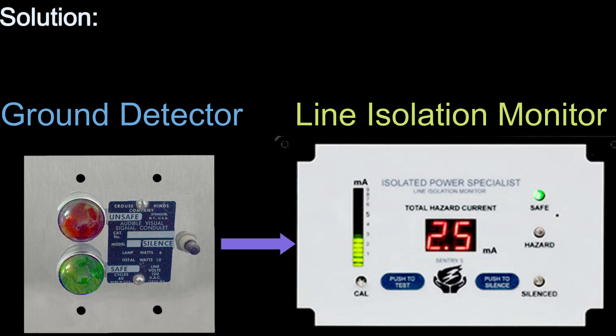The old ground detector measured an imbalance between each leg, which is not an accurate reading of the hazard current.